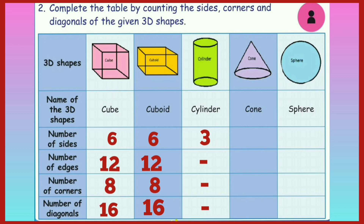Next, cone. A cone has no sides, no edges, no diagonals, and 1 corner. Next, sphere. A sphere has no sides, no edges, no corners and no diagonals.